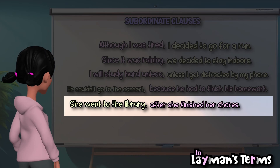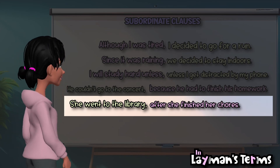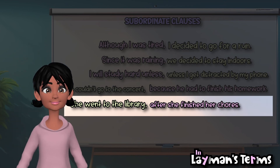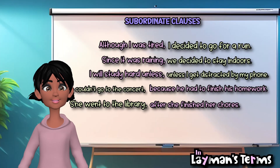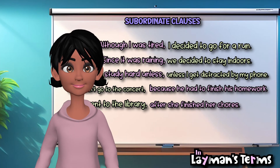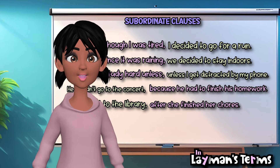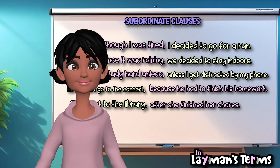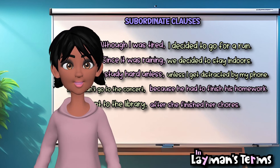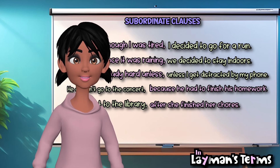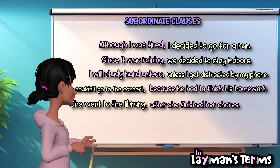The subordinate clause, after she finished her chores, shows the sequence of events. So, in simple terms, a subordinate clause is like a supporting character in a sentence. It adds extra information and cannot stand alone as a complete sentence.